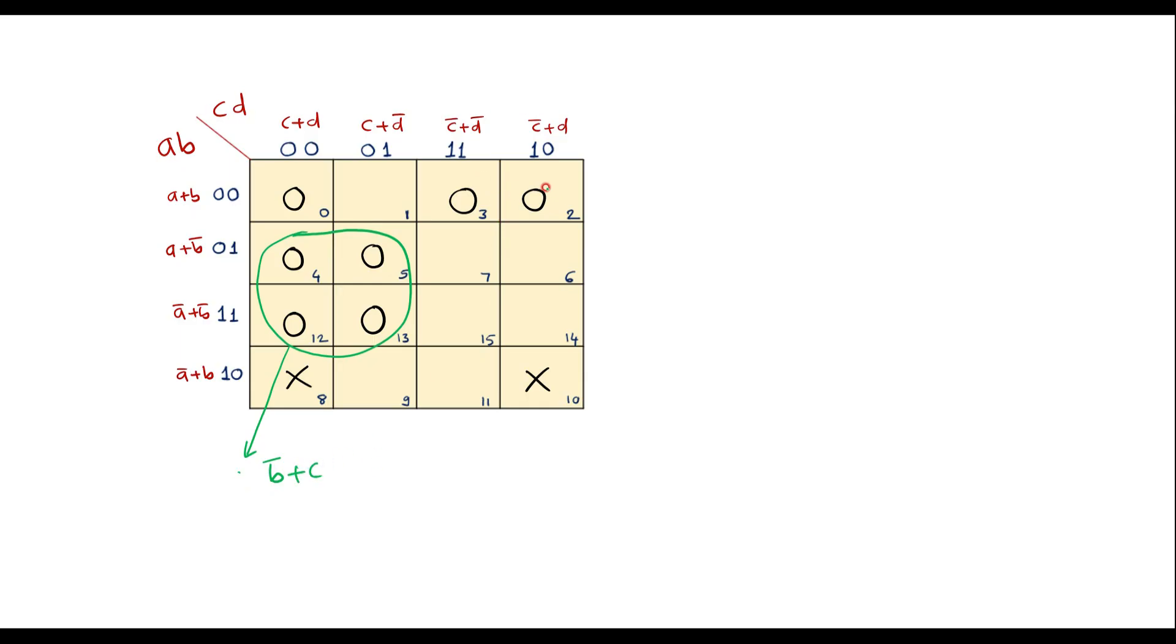Then here we have 0, 0. This I can make a pair. So this is with respect to this row. The value is a plus b. So it covers these two columns. So common factor between these two is c bar. That is plus c bar.